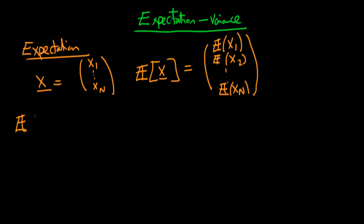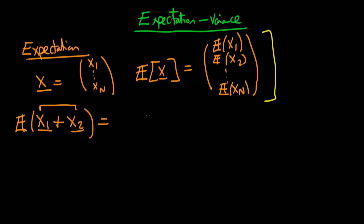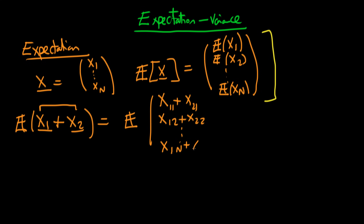The expectation of the sum of two random vectors x1 plus x2 — because of the way in which we've defined the expectations operator — we can break this down into steps. The first step is combining each of the two vectors element-wise, so the top element is x11 plus x21, the second element is x12 plus x22, all the way down to x1n plus x2n.